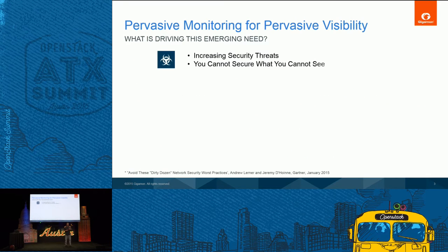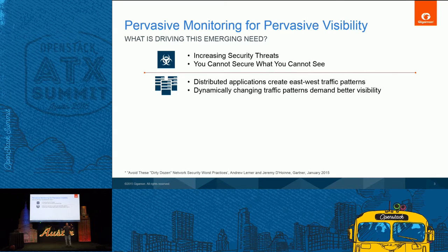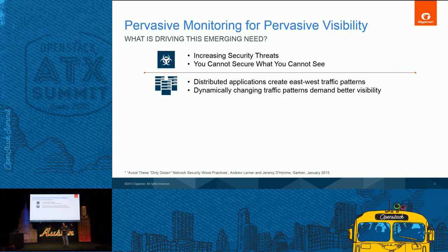Why do you need pervasive monitoring? Here are some use cases. Increasing threats — you cannot secure what you cannot see. Logs may give you some data, but not the entire packet information you want to capture and analyze. Next, distributed applications have east-west traffic patterns where VMs are migrating across your entire infrastructure. How do you visualize or inspect that traffic as it propagates?